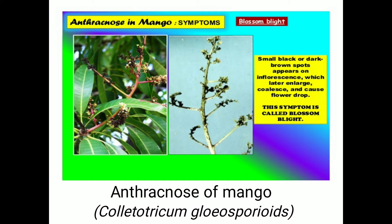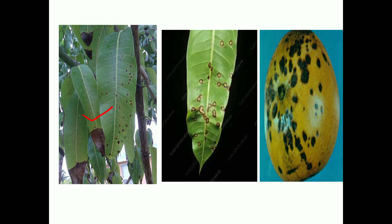The symptoms of anthracnose: when this fungus attacks the plant, it covers all parts — leaves, stem, inflorescences, and fruits. On the leaves, small minute brownish spots are observed. These brownish spots increase and coalesce with each other to form a large patch. On the fruits, dark black colored spots are observed, causing discoloration. Sometimes rotting of fruits also takes place in severe infestation.